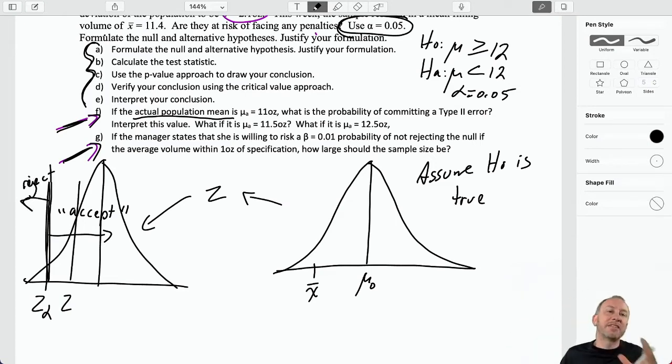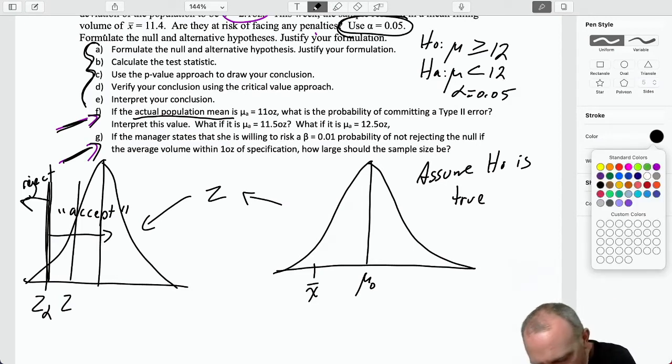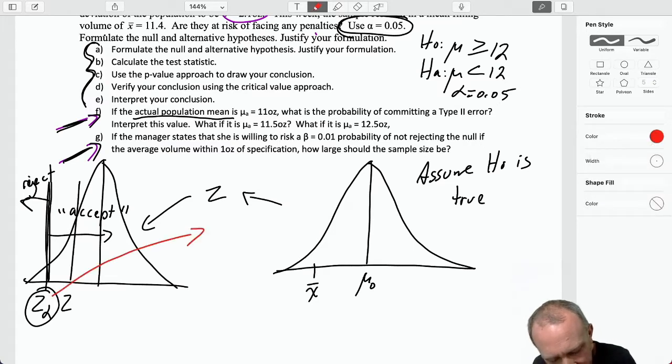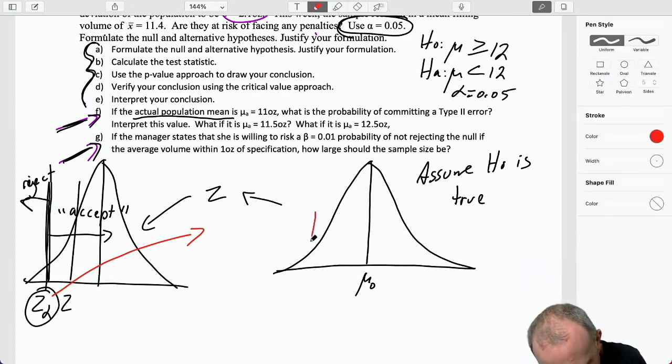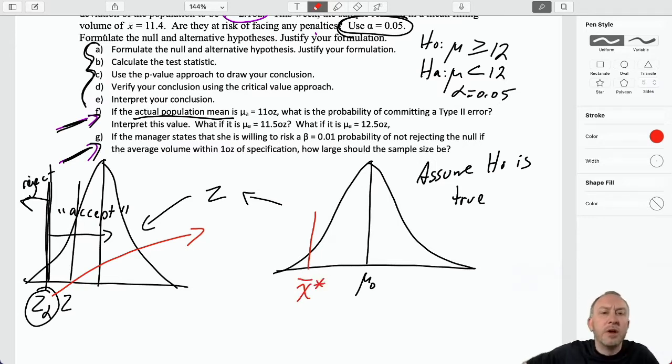Again, I'm using quotation marks only because we're talking about type 2 errors. Normally, we would never say accept. We would say do not reject. But that critical value delineated that either where we accept or where we reject. Now, for the discussion of type 2 error, I want to come backwards, starting with that critical value and convert it into what we called an x-bar star, which is that sample mean that would translate directly into our critical value.